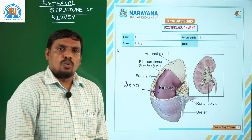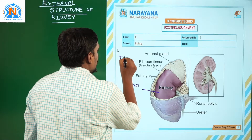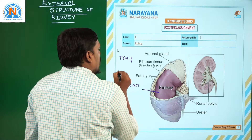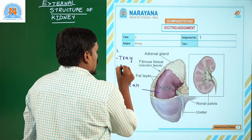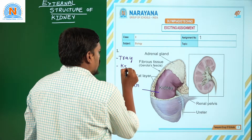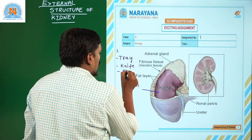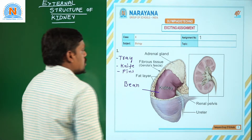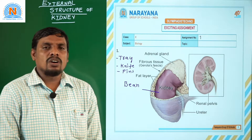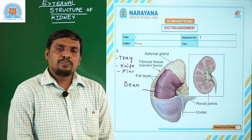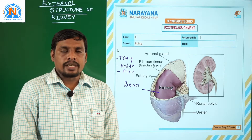Required materials: we need a tray, a sharp knife, and pins. These are the materials required to demonstrate our observation of external morphology of human kidney. Now let us look at the procedure.